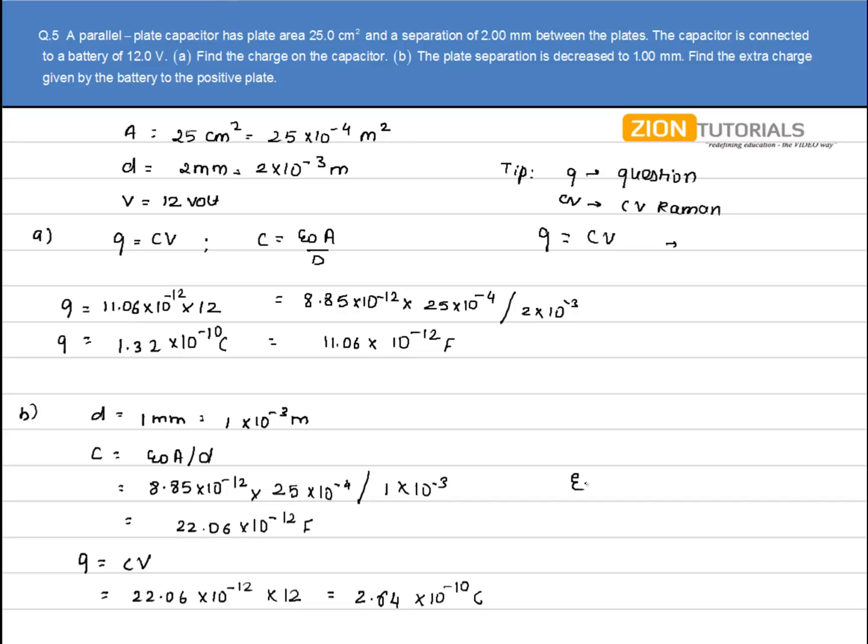The extra charge that flowed is the final charge minus the initial charge: 2.64×10⁻¹⁰ - 1.32×10⁻¹⁰ = 1.32×10⁻¹⁰ coulombs. That is our answer.